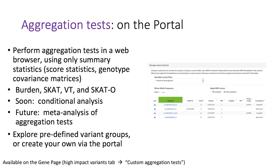The library runs burden, SKAT, BT, and SKAT-O on summary statistics — score statistics and covariance matrices — which are easy to share and common in many meta-analysis studies. In the future, we're hoping to add conditional analysis, conditioning on any variant in the region, and possibly also meta-analysis. So if you had multiple sites contributing statistics, we could run the meta-analysis right there in the web browser and show you the result.